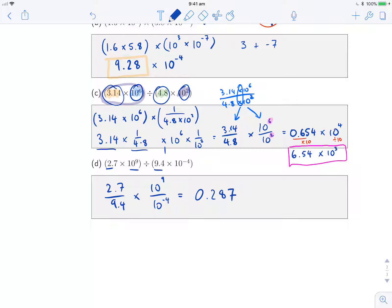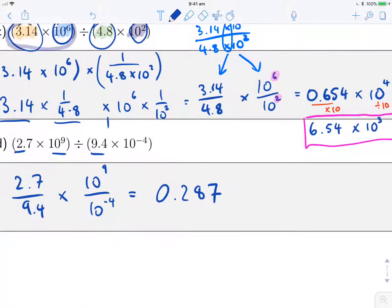So 0.287, and then we've got 10 to the 9 divided by 10 to the 4, so remember we're subtracting here, but it's 9 minus negative 4, and remember if we subtract a negative number, it's the same as adding, so what we have here is 10 to the 13.